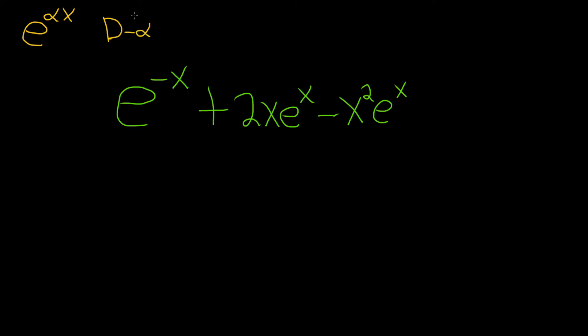What that means is, if you apply this operator to this function, you're going to get zero. This is the differential operator D. So D minus α is going to take care of this piece.